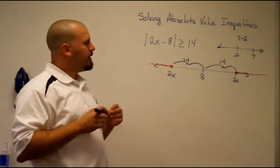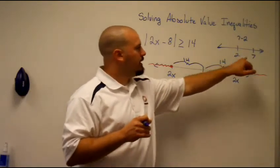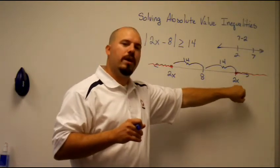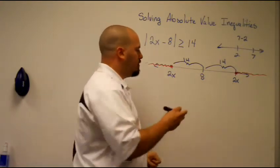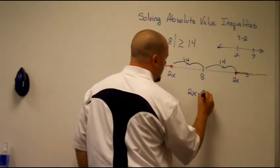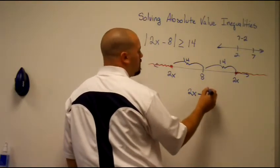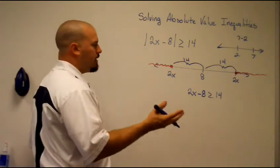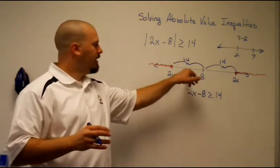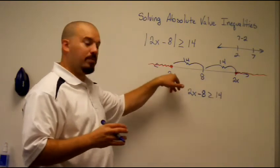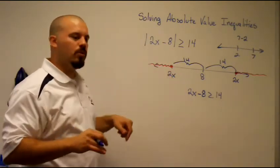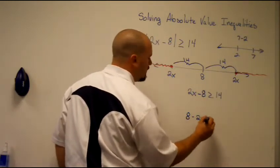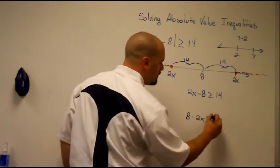To set this up and actually solve this inequality, we're going to use the same idea — take the one number on the right and subtract the number to the left. So 2x minus 8 has to be greater than or equal to 14. The other inequality is when we start at 8 and check the distance going the other direction. So 8 minus 2x is greater than or equal to 14.